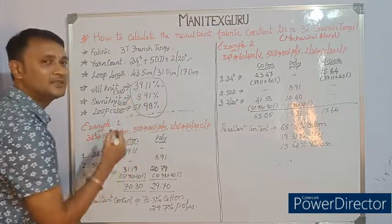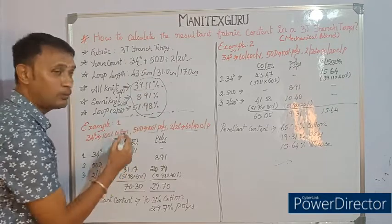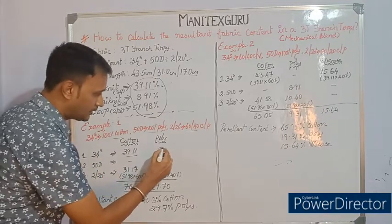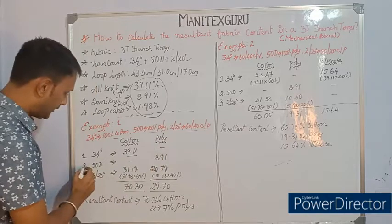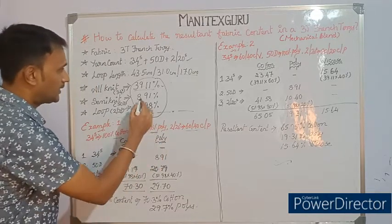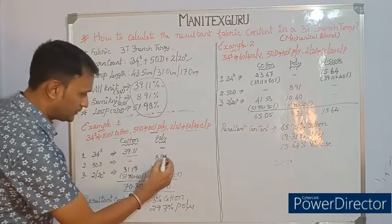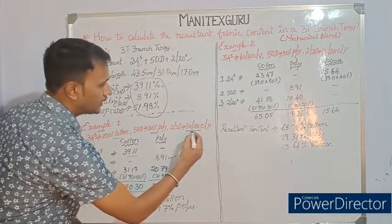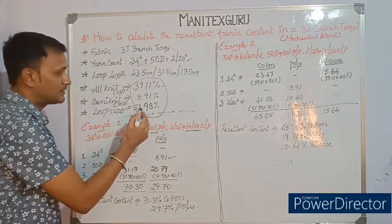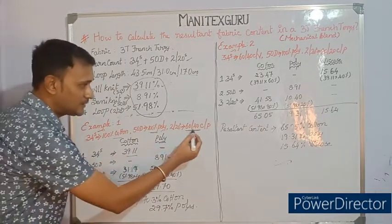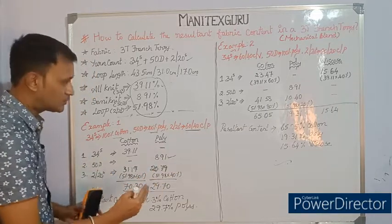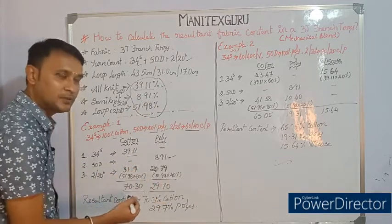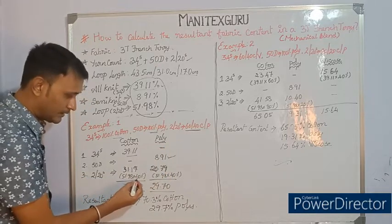For the all-knit 34s, it is 100% cotton, and its contribution is 39.11% — so the entire 39.11% is placed on the cotton side and zero on polyester. For the semi-knit 50 denier, it is 100% polyester with a contribution of 8.91% — so the full 8.91% goes to polyester. For the looper 2/20s, it is 60/40 cotton-polyester with a contribution of 51.98%. We need to split this: 60% goes to cotton and 40% goes to polyester.